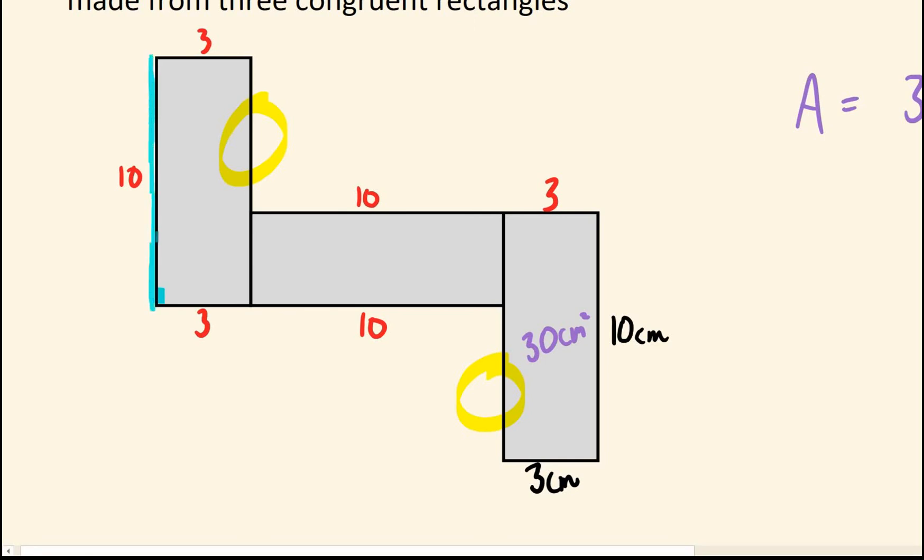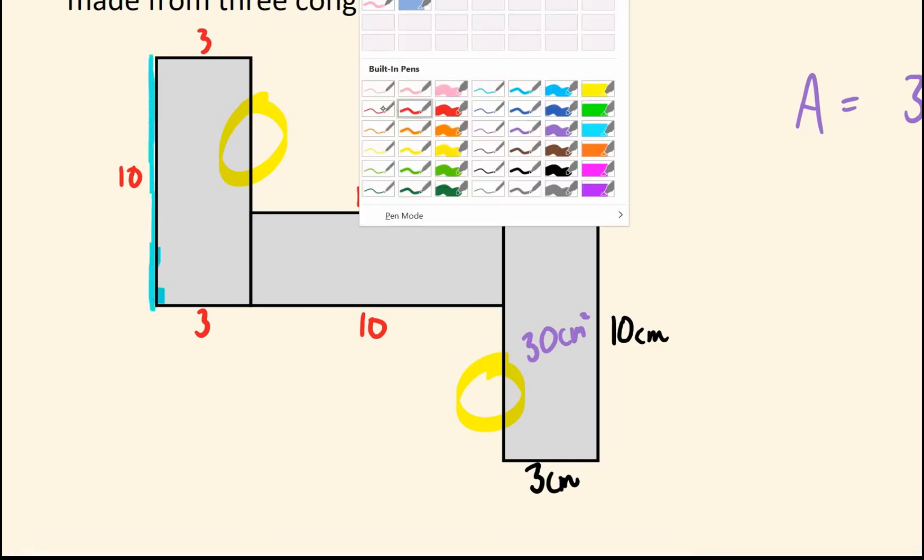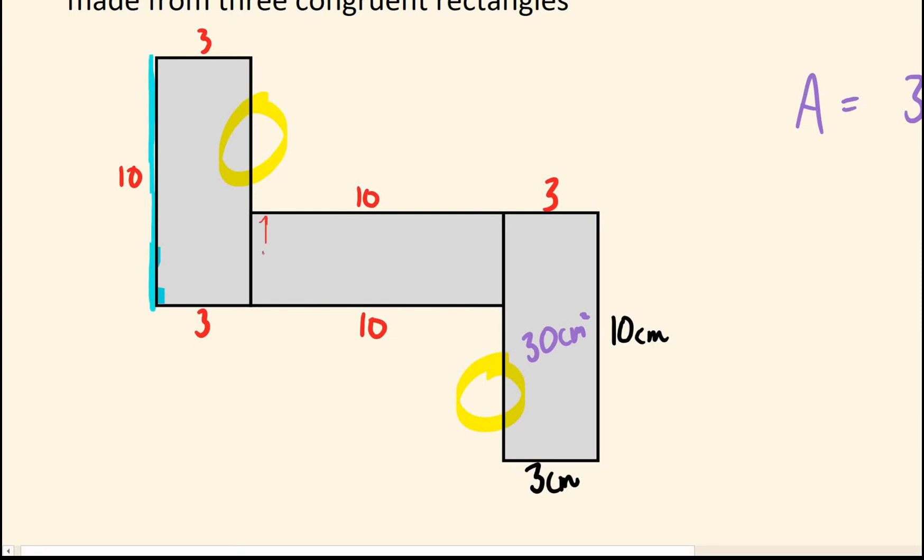And both of those are going to be the same actually. If we look here, the height of this rectangle is 10. Okay, we have got 3cm so far going up. It has to go up for a total height of 10. Which means this must be 7cm and again for the exact same reason, this is also 7. So now you can add up all the lengths from the outside and that will give you the perimeter.